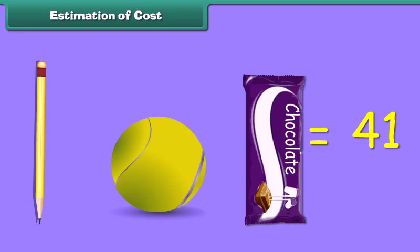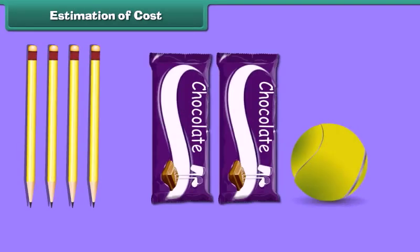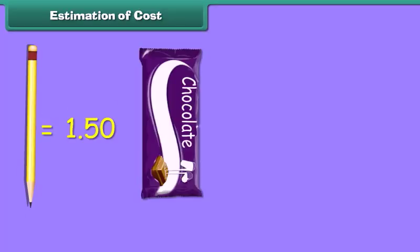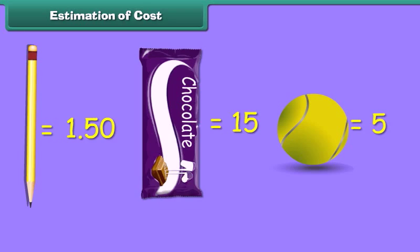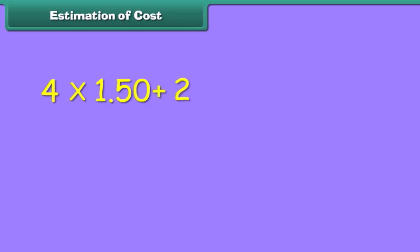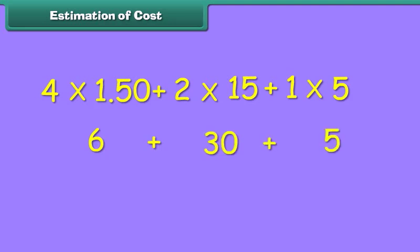Estimation of cost means calculating the total cost of different items. For example: what will be the total cost of 4 pencils, 2 chocolates, and 1 tennis ball? The unit cost of a pencil is 1.50 rupees, a chocolate is 15 rupees, and a tennis ball is 5 rupees. The total cost equals 4 × 1.50 plus 2 × 15 plus 5, which is 6 plus 30 plus 5 rupees, amounting to 41 rupees. This is the estimated cost.